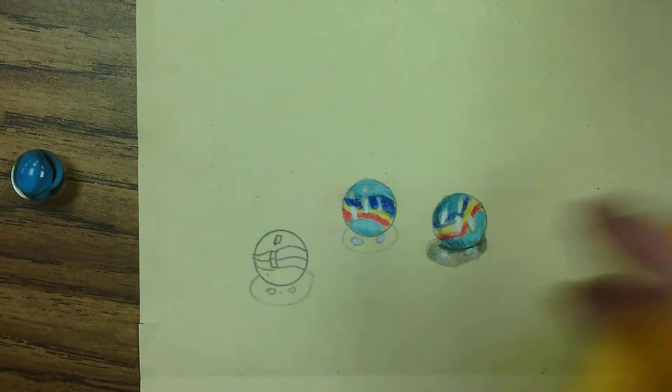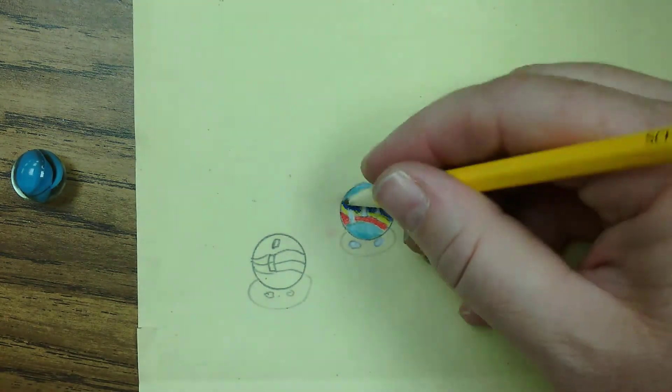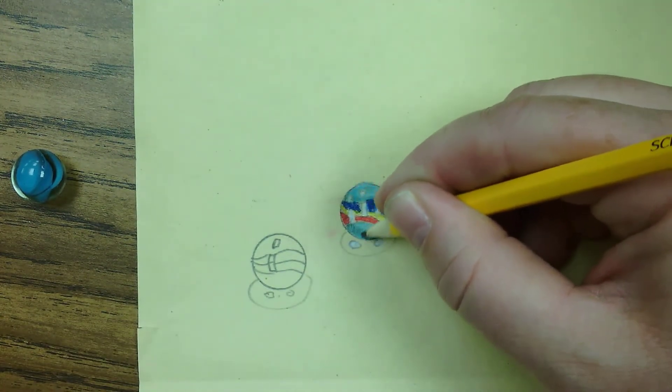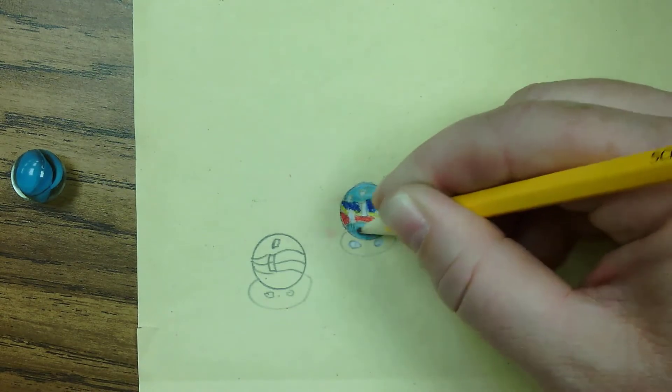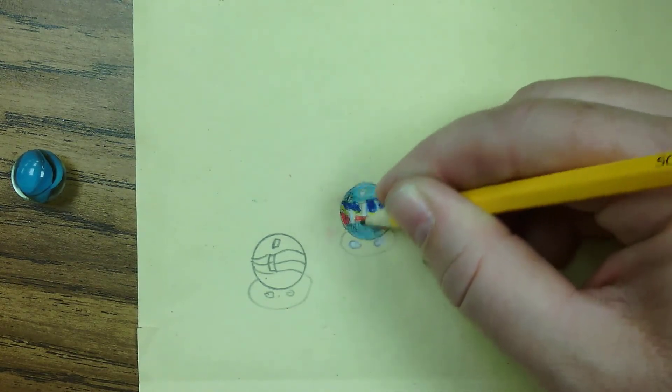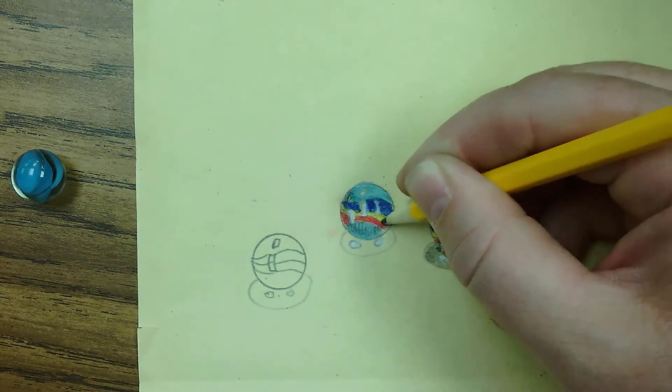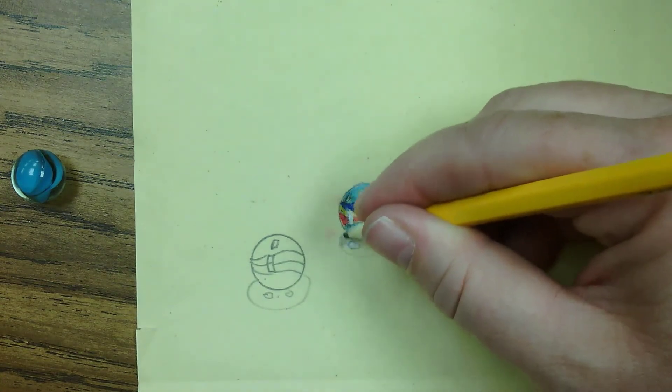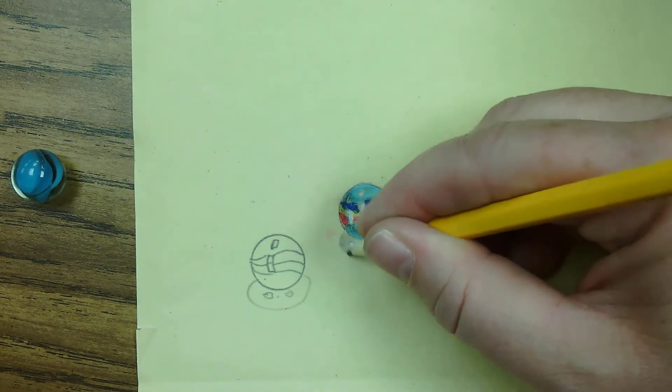Next grab your pencil for some shading. Now think of this as a sphere. We're just going to add a little bit of shading around the bottom and the left side, or whatever side your light source is coming from. Do the opposite side.